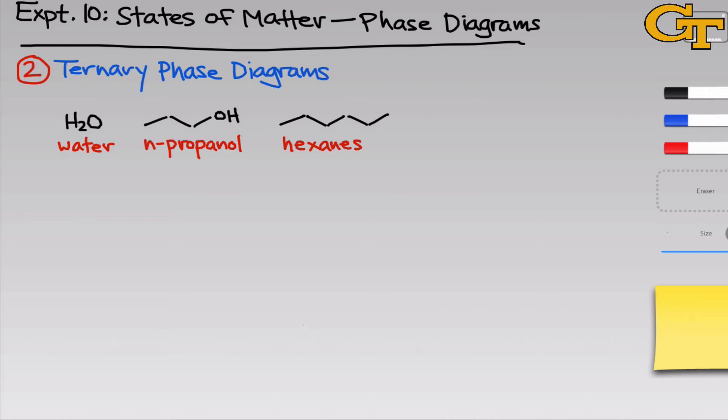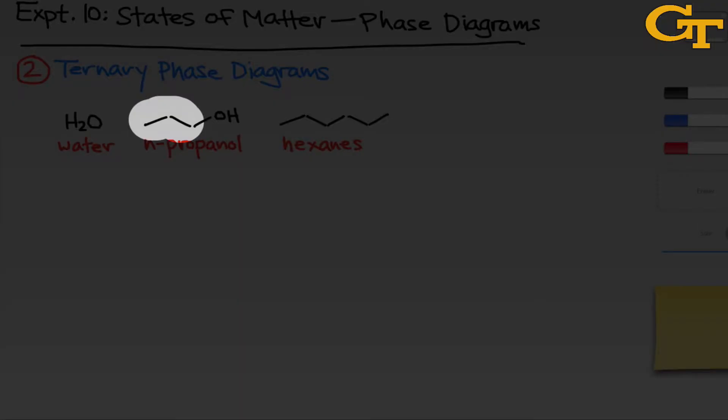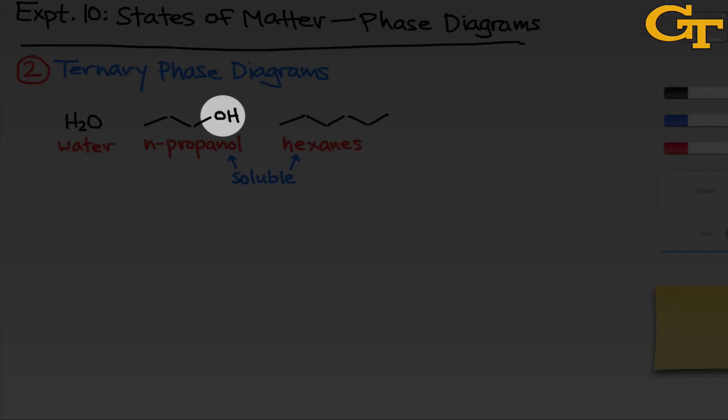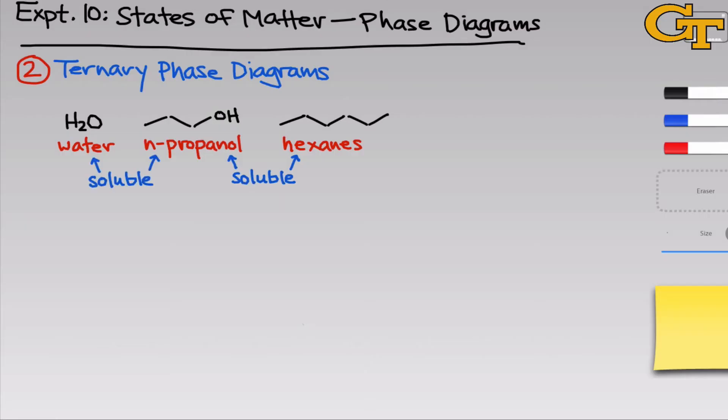For one thing, n-propanol is what we might call an amphiphilic molecule. It's got a non-polar part on the left-hand side right here, which is a hydrocarbon chain, and that makes it soluble with hexane. But it's also got a hydroxyl group, and that polar component of n-propanol makes it soluble with water.